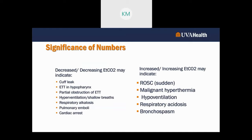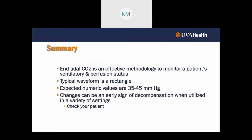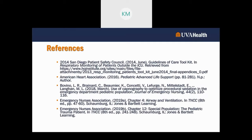In summary: decreasing end-tidal CO2 may indicate hyperventilation, cardiac arrest, or pulmonary emboli; increasing end-tidal CO2 may indicate malignant hyperthermia, bronchospasm, or ROSC. End-tidal CO2 is an effective methodology to monitor ventilatory and perfusion status. Expected numeric values are 35 to 45 — if outside that range, check your patient and determine if it's expected. Changes may be an early sign of decompensation, so trend your patient, use it as a tool, and intervene when you cannot explain the values.